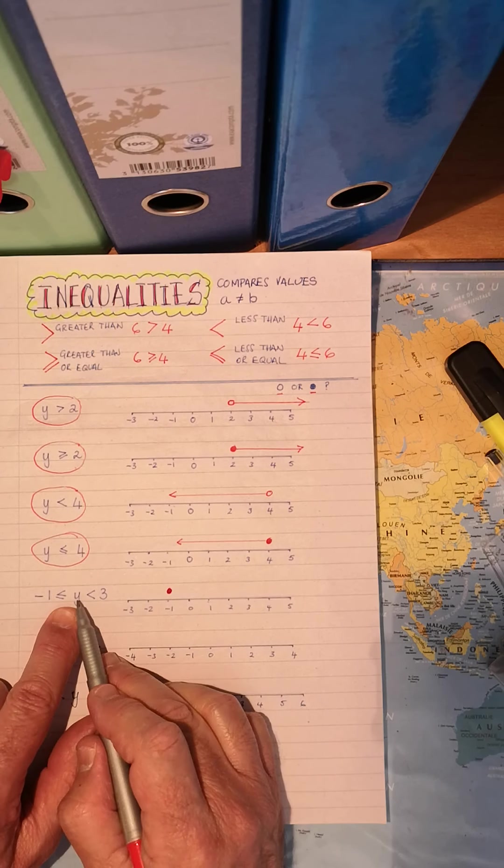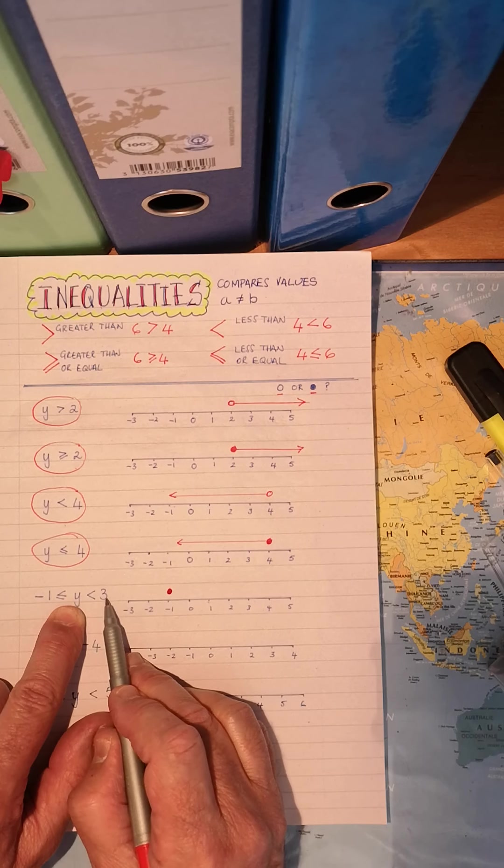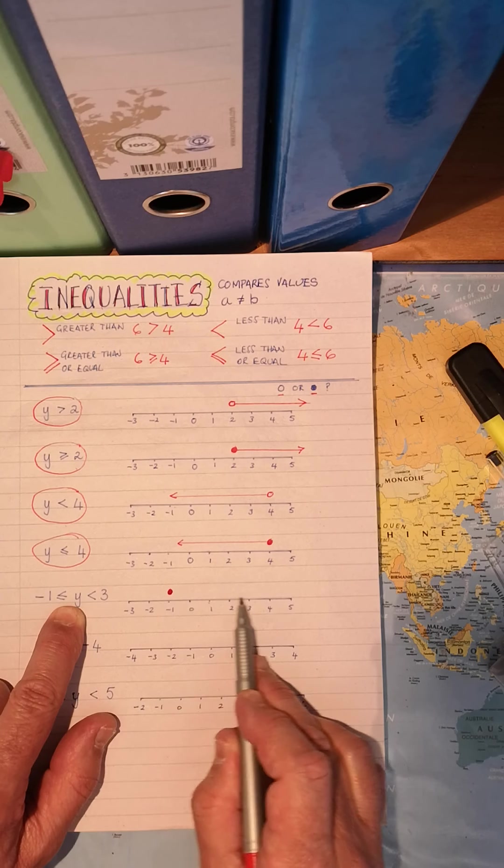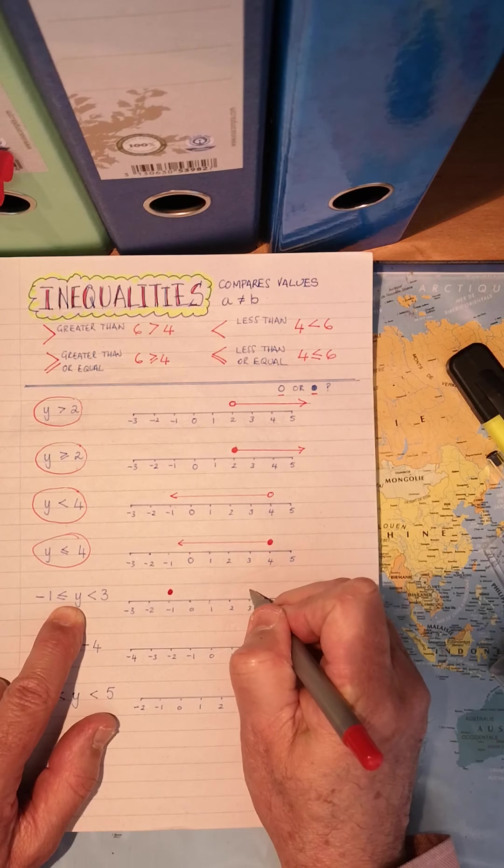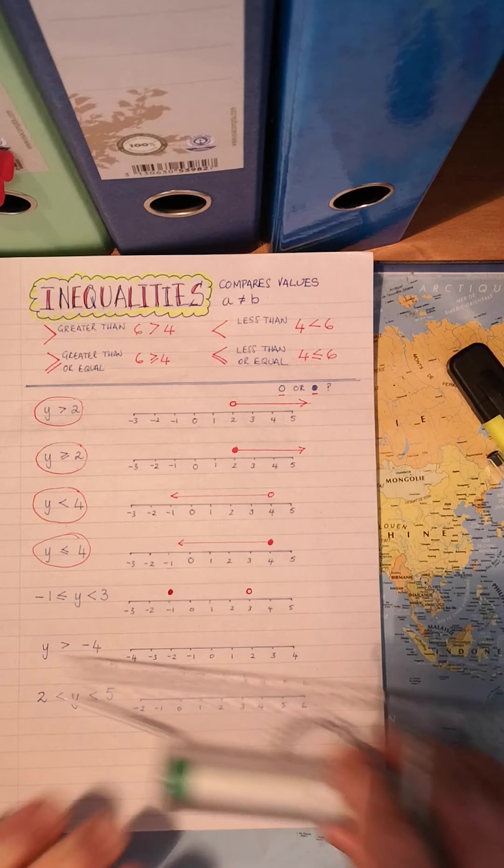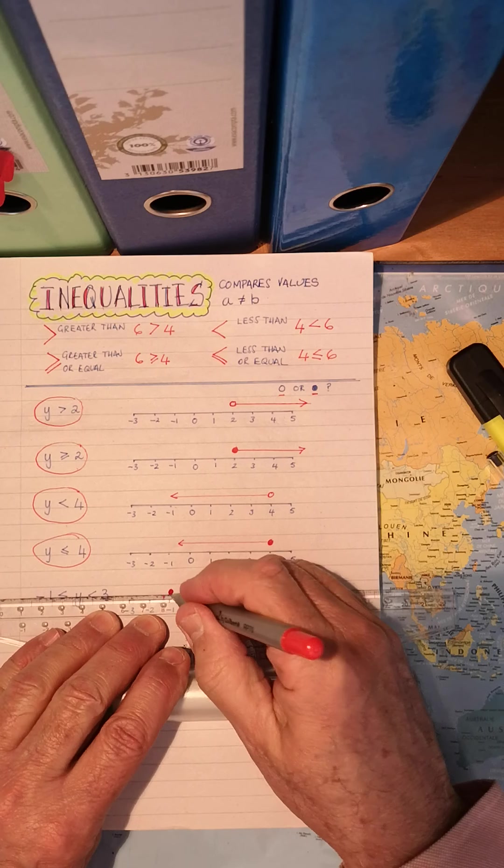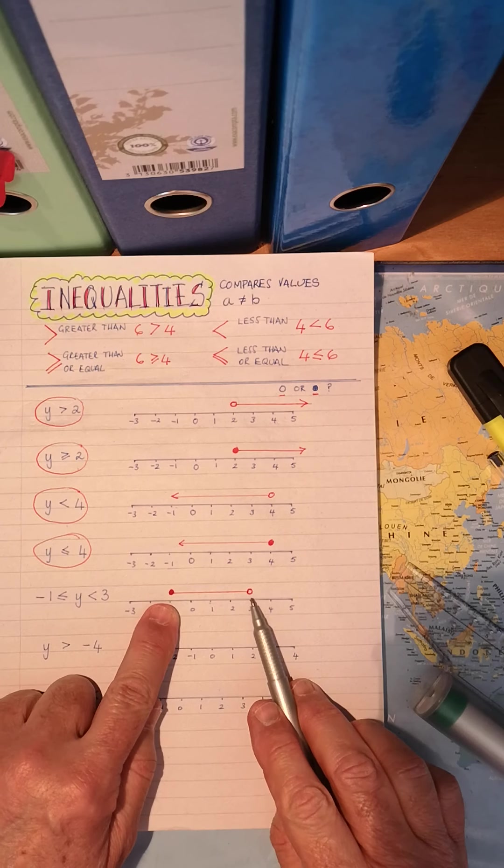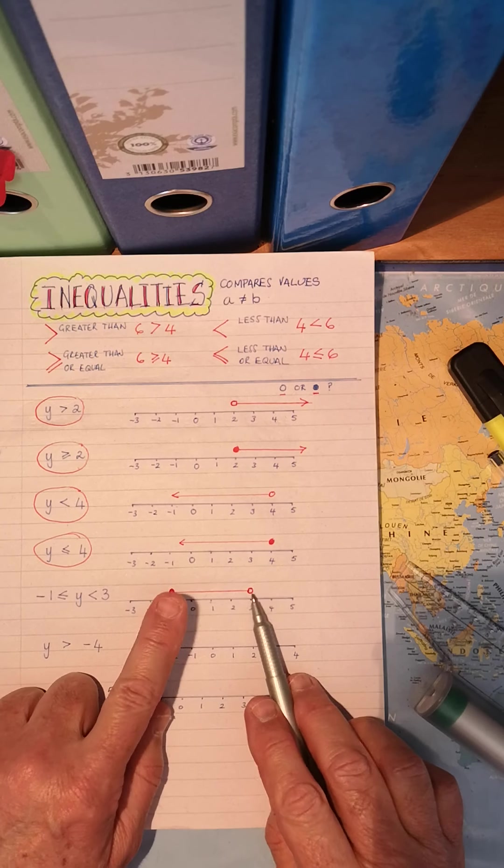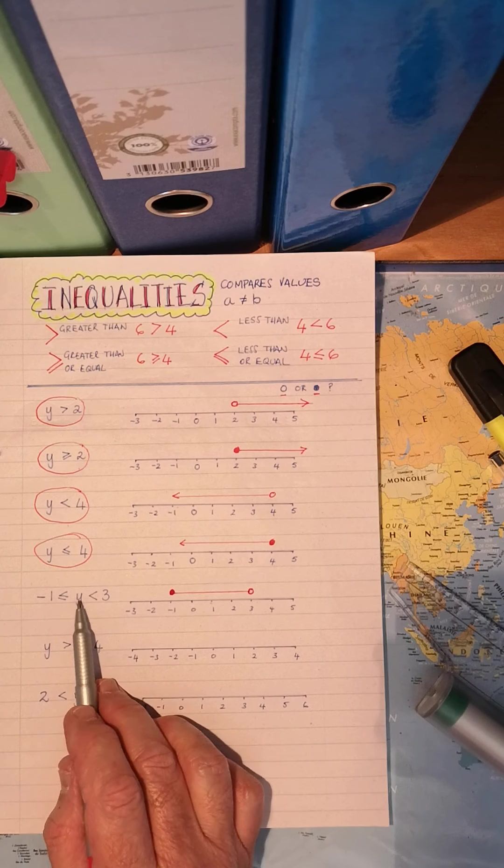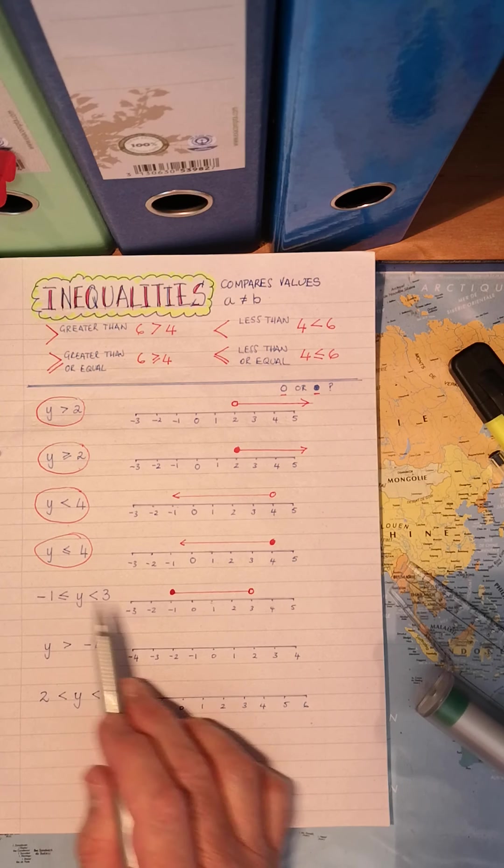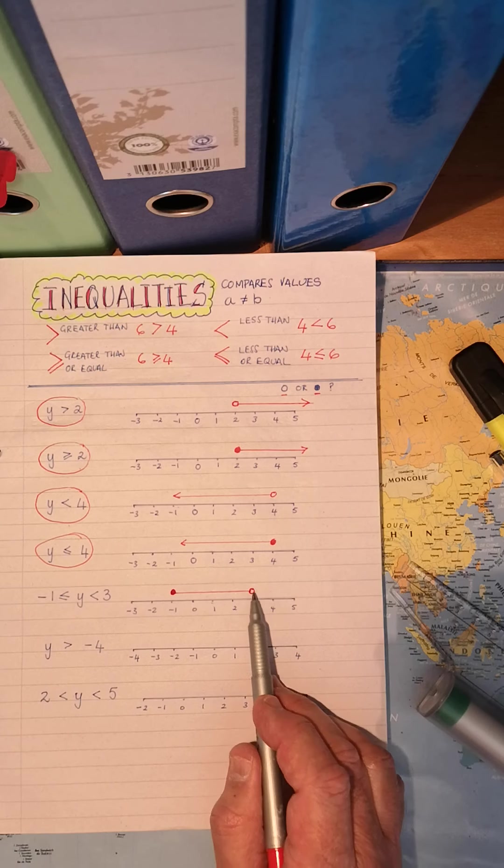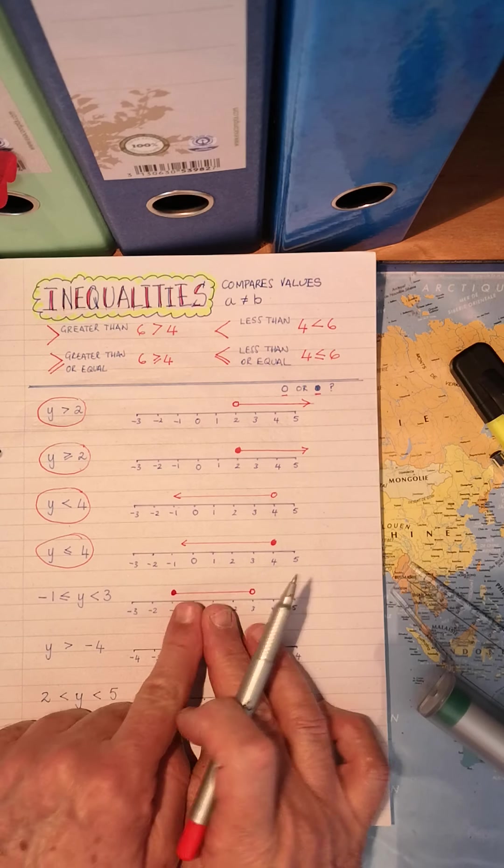Y is however smaller than three. Smaller than three. Is three included? Let's go to three. No. Open circle not included. So here we have a case of between. This is going to be between numbers. All right. So Y again. Bigger than or equal to minus one. Going that way. Bigger than. And less than three. Open circle less than three. Okay.